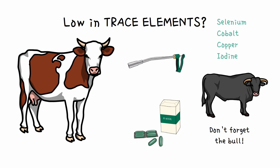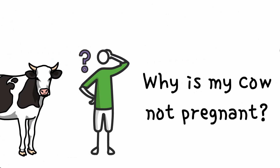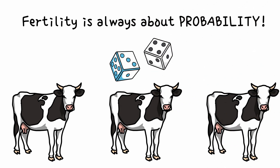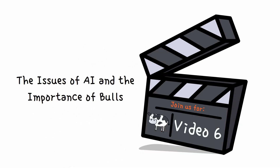Our next video looks at the importance of bulls. Hopefully this video will help advisors answer the question: why is my cow not pregnant? But in an individual cow, it is very difficult to answer. The key to identifying and investigating a problem is good record keeping. Fertility is always about probability — the chance of a cow getting pregnant. For good conception rates, good fertile semen needs to be available. Our next video looks at issues with AI and the importance of bulls.